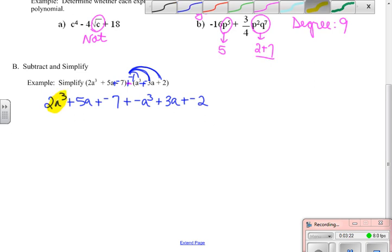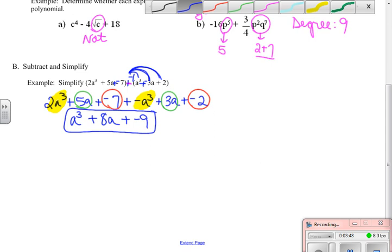So here is an a cubed thing, here is an a cubed thing, and so I have one a cubed thing left. And then I can, here's my a term, here's my a term. When I combine those, I have 8a. And when I look at my constant terms, I have plus negative 9. And that is how you add and subtract those polynomials.